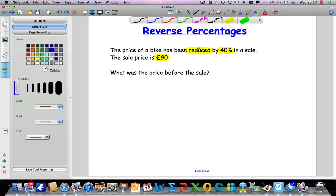So how can I use this information to start the problem? Well, if it tells me that it's been reduced by 40%, the old price was 100%. It must have been. And if I reduce that by 40%, I've got to take off 40%. That means that the new price must be 60%. So I can safely say that 60% must be equal to £90.